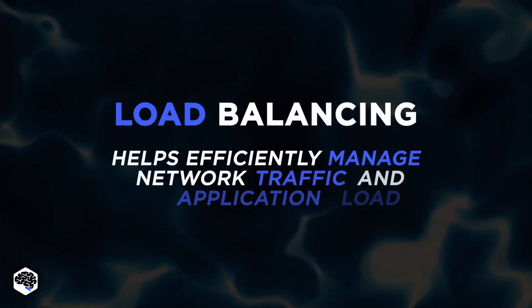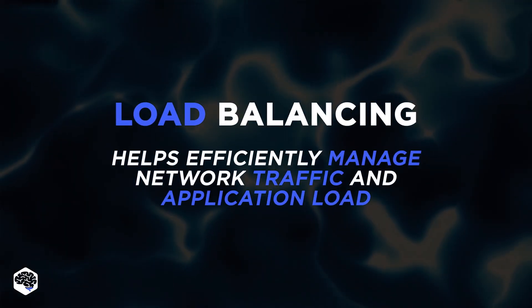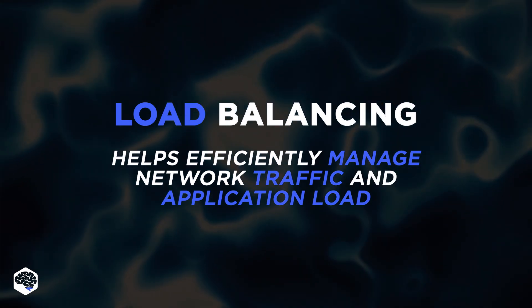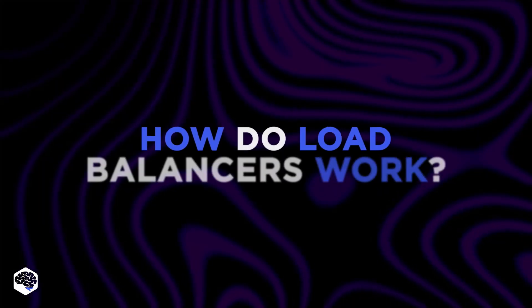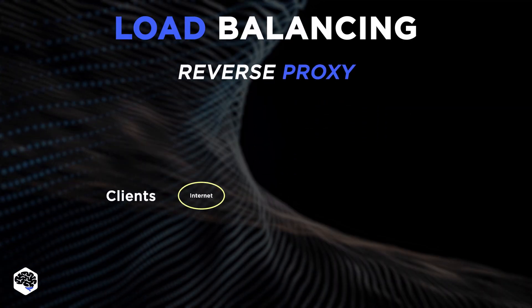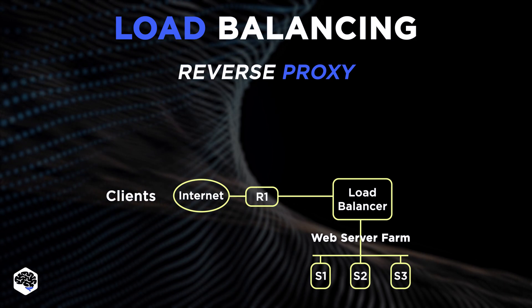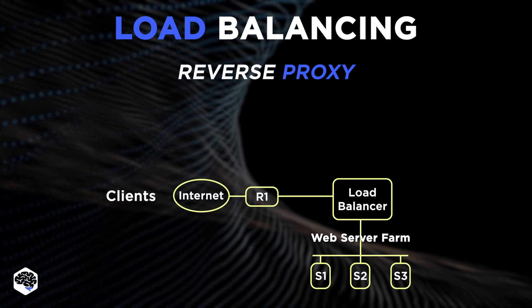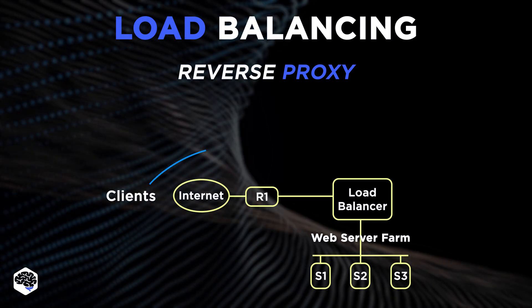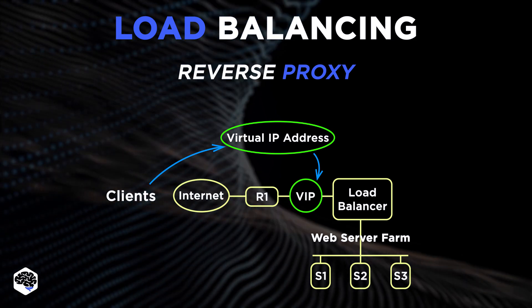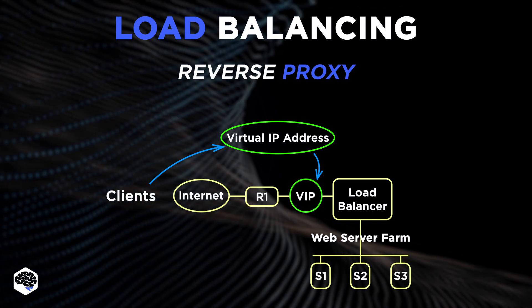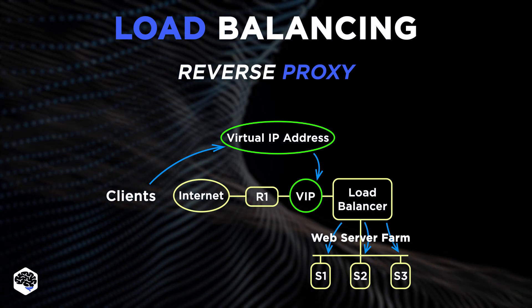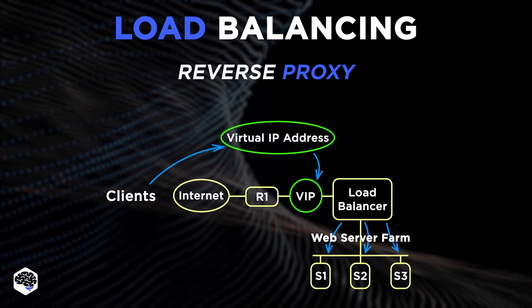The key factor in ensuring availability is load balancing — it helps you efficiently manage network traffic and application load. A load balancer is a reverse proxy. It presents a virtual IP address, VIP, representing the application to the client. The client connects to the VIP and the load balancer makes a determination through its algorithms to send the connection to a specific application instance on a server.